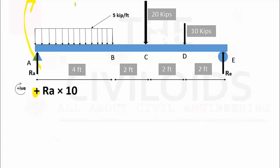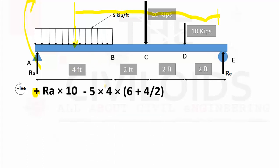The moment of this distributed load equals the magnitude of the resultant of this force multiplied by its perpendicular distance to point E. The resultant of this force equals the magnitude of the force multiplied by the length on which it is applied, which is 5 × 4. The perpendicular distance of this force is 6 feet plus half of the length over which the load is applied, which is 4 divided by 2. The sign of this moment is negative because this load is producing an anti-clockwise moment about point E.